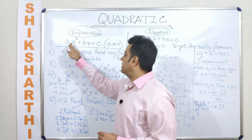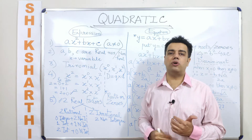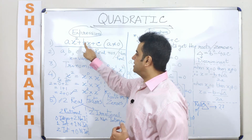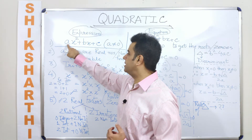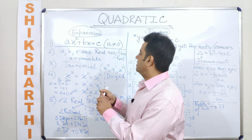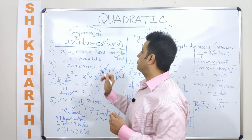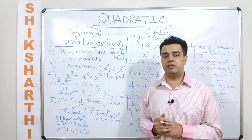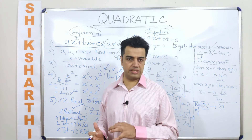Moving forward, talking about a, b, c — what are these? These are the coefficients. Why do we call them coefficients? Once we understand that x is a variable, anything that is multiplied with x is a coefficient. For example, a is multiplied with x squared, b is multiplied with x, and c is multiplied with x to the power zero. So these multipliers are known as coefficients. The word 'co' means two or more things at the same time.